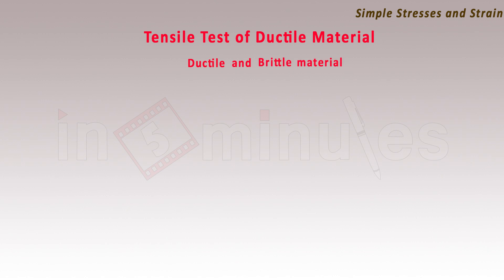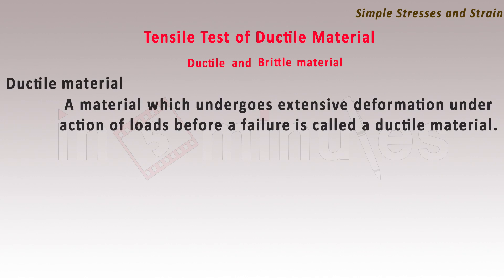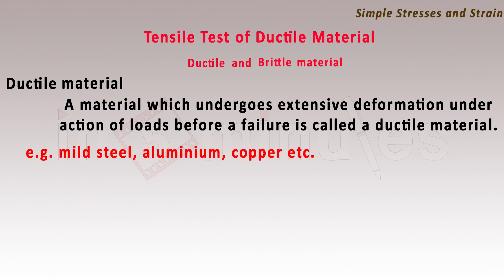What is ductile and brittle material? A ductile material is a material which undergoes extensive deformation under the action of loads before failure. Examples include mild steel, aluminum, copper, and many other materials.